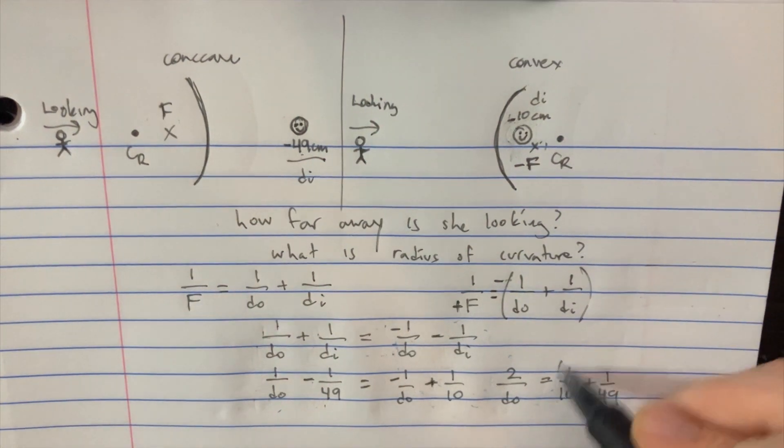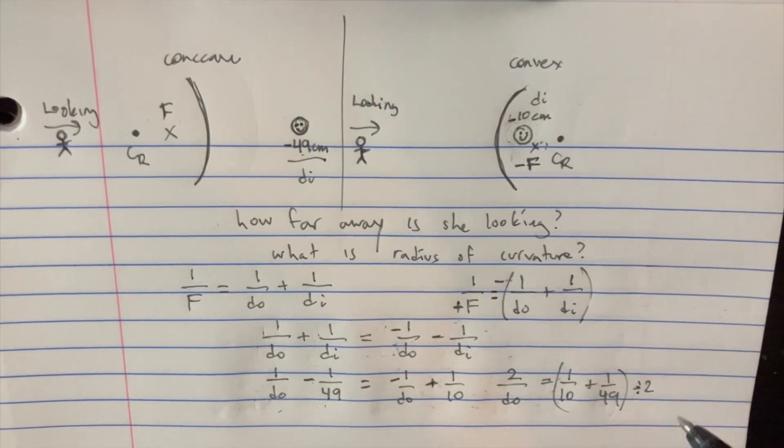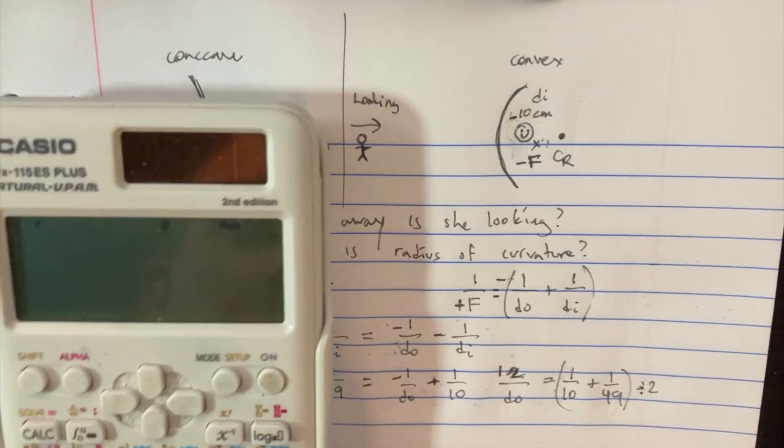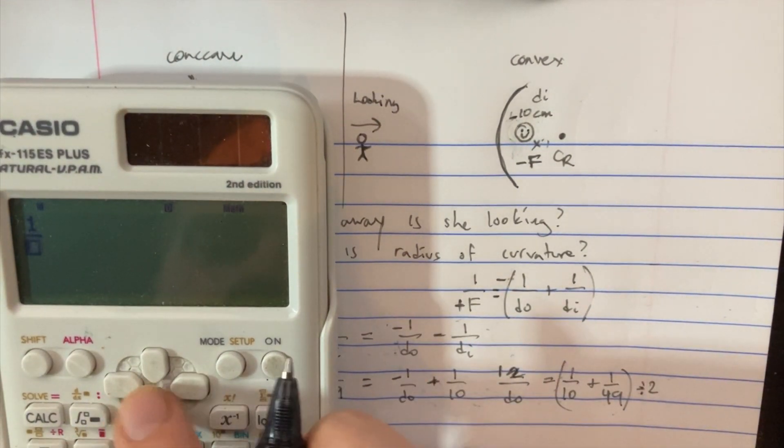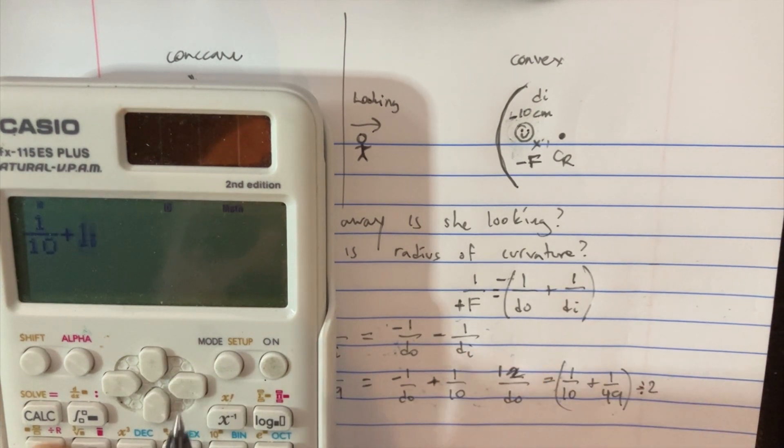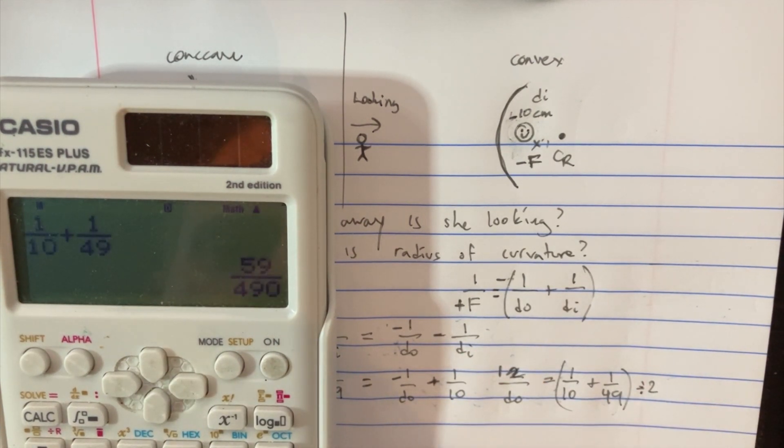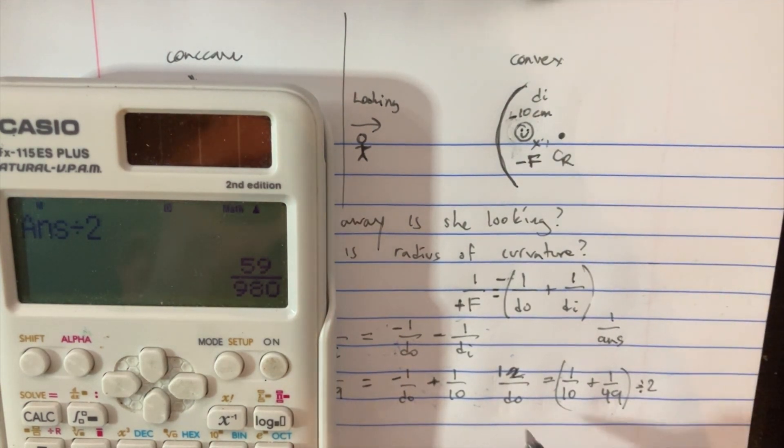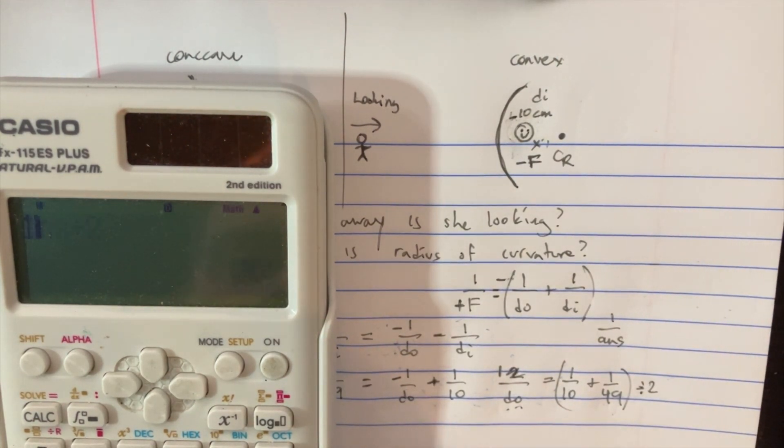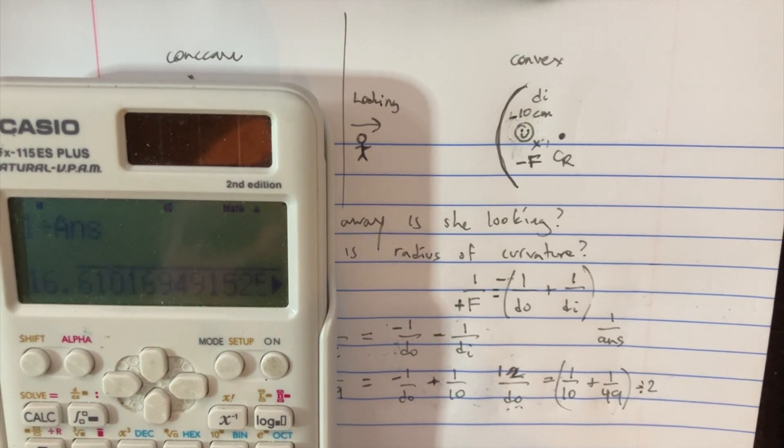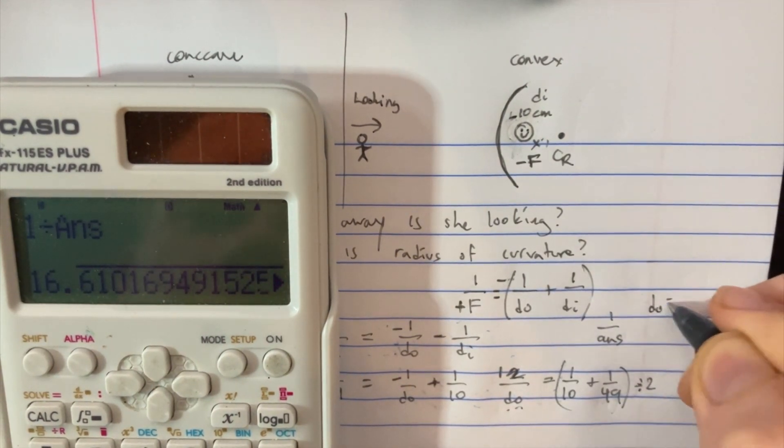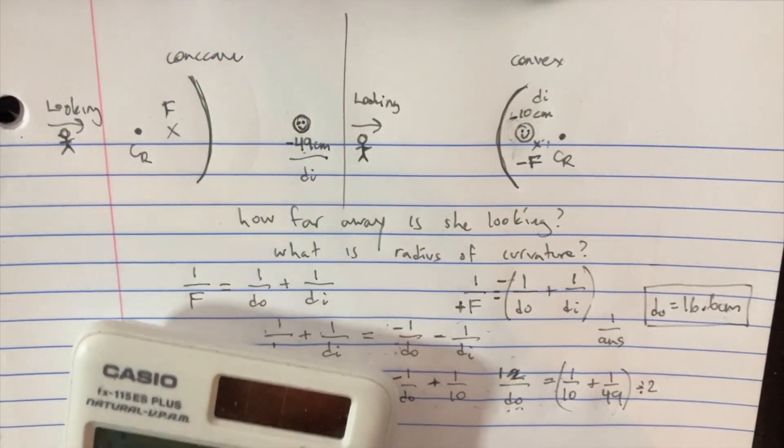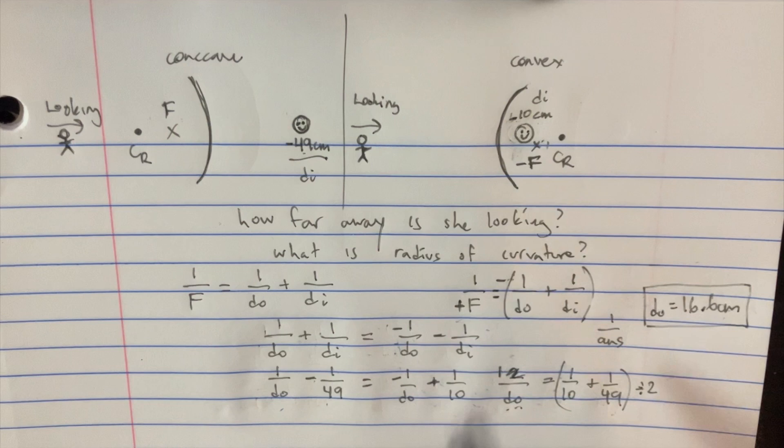So let's try to solve that. But we're going to want to divide this answer by 2 so that way we can get a 1 on top there. It'll make this a little easier. If we put this in the calculator, 1 over 10 plus 1 over 49, and we divide that by 2, then we're going to do 1 over the answer to get the D not, D of the object. So that should give us 16.6 centimeters for this object. And that's how far away she is when she's looking.